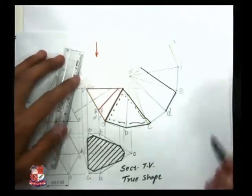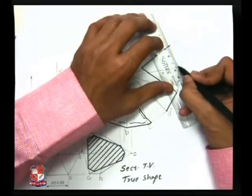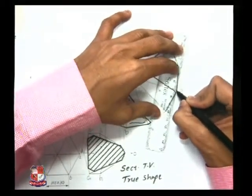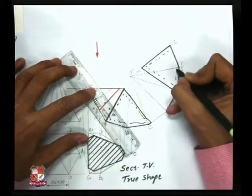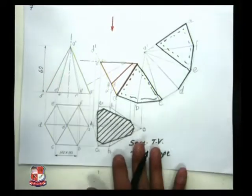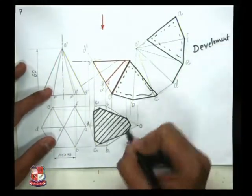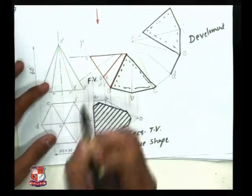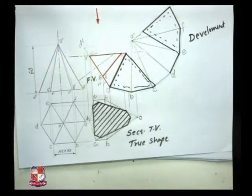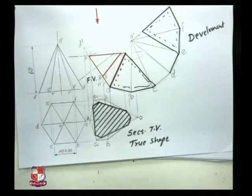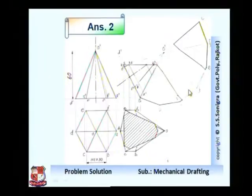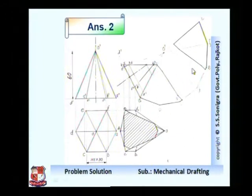On this side also, this portion retains with us if we cut this one. So this is the development of the given pyramid for this given condition. You can write here it is a development; this is the sectional top view and this is the front view. The solution can be drawn as shown here. The front view makes a certain angle — this base makes an angle of 60 degrees with XY line, with HP. This is the true shape or sectional top view, and this is the development of the given solid. That is problem number two.